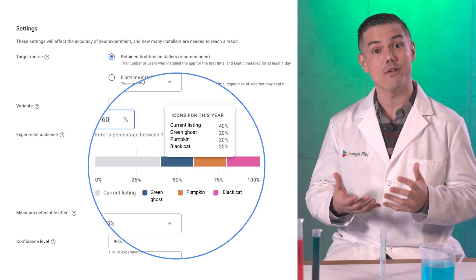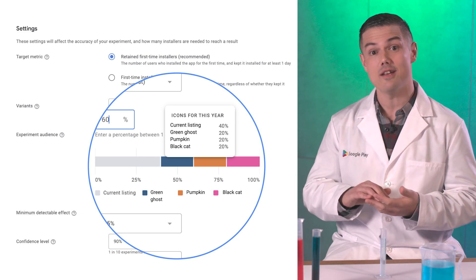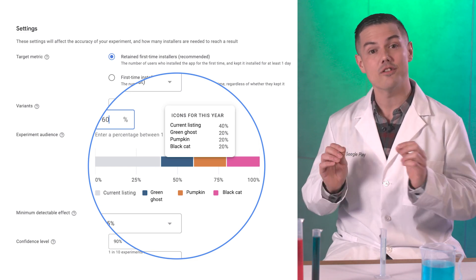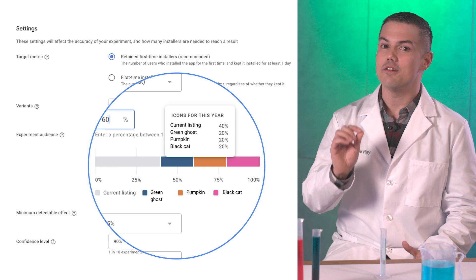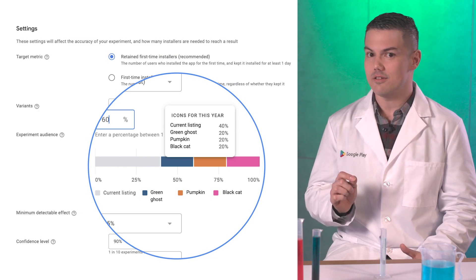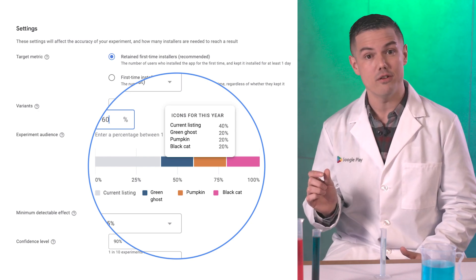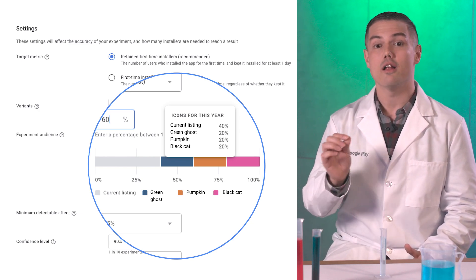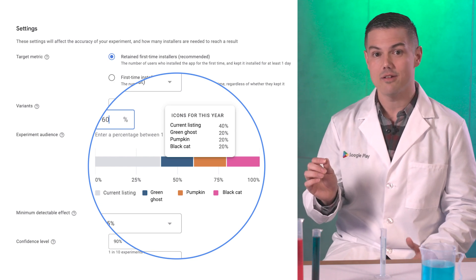So we chose to run an A, B, C, D test on just the icons. We had our default store listing still run for 40% of users, along with three other different icon variants.